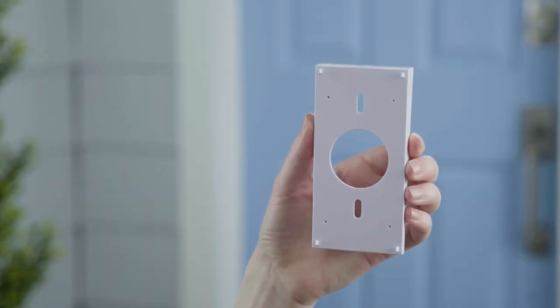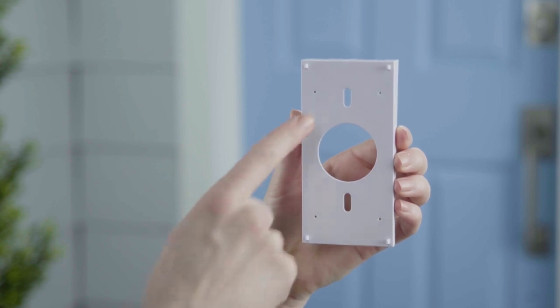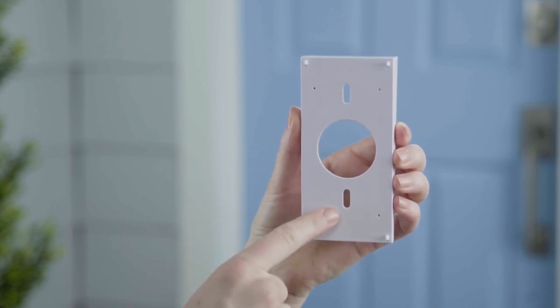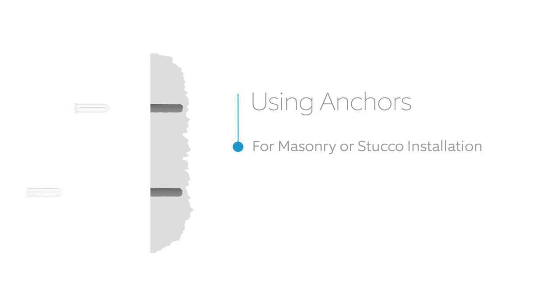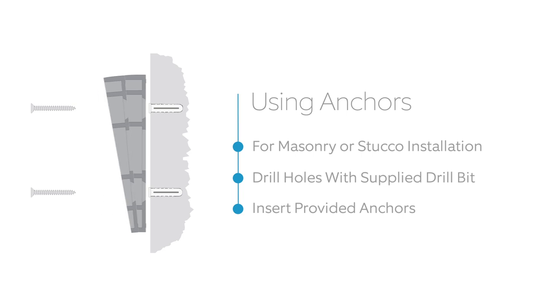After selecting your desired angle, first screw the wedges into your wall through these two slots. Just like installing your Ring Doorbell, if you're installing the Wedge Kit on a masonry or stucco surface, first drill holes and insert the supplied anchors before screwing the wedges in.